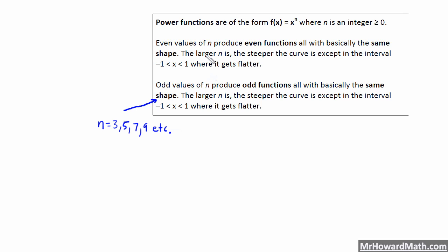Even values of n produce even functions and they all basically have the same shape. They're going to be the same shape as our x squared parent function, so they are parabolas. The larger n is, the steeper the curve is, so the faster it increases, except over the interval from negative 1 to 1, where it actually gets flatter.